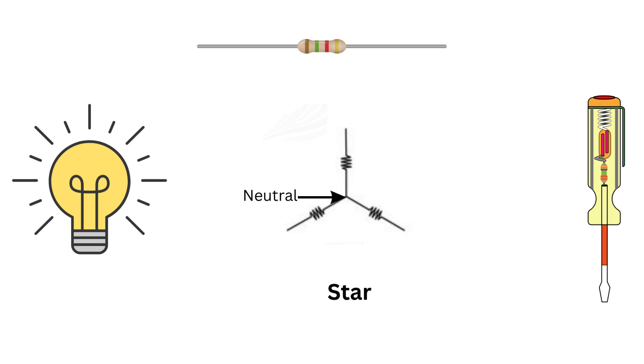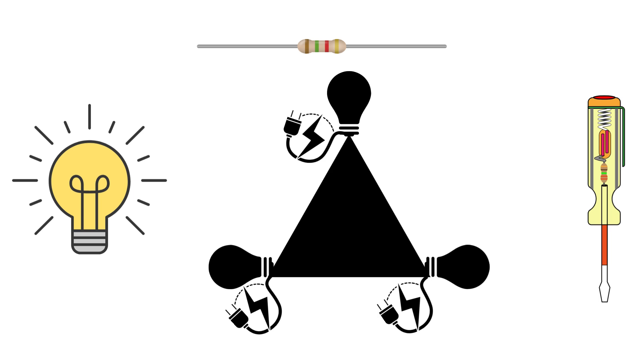But what if you want a different kind of connection? That's where the delta connection comes in. Now picture a triangle. In the delta connection, each component like our light bulbs is connected in a loop forming a triangle. The power source is connected across two points of the triangle.